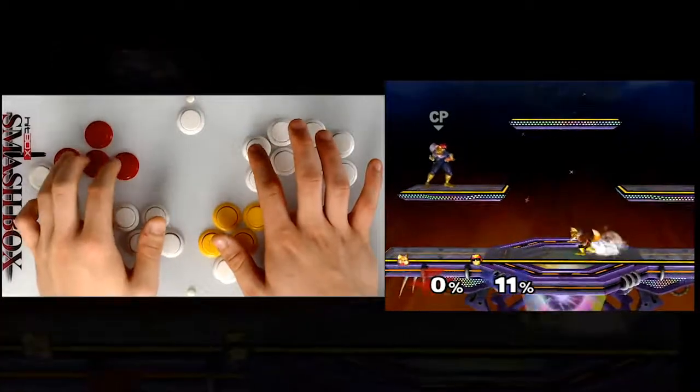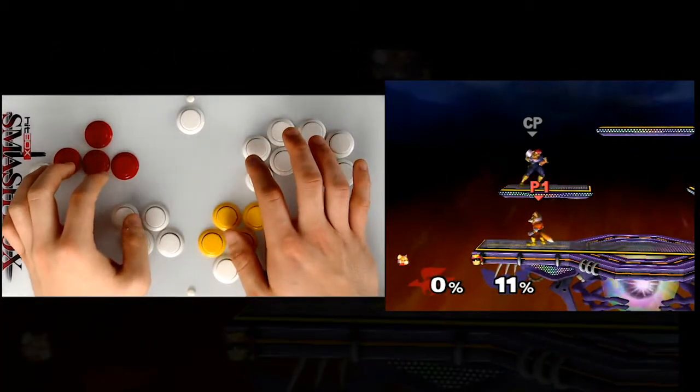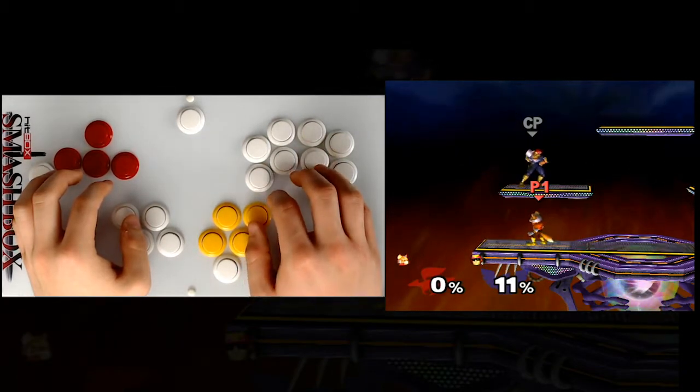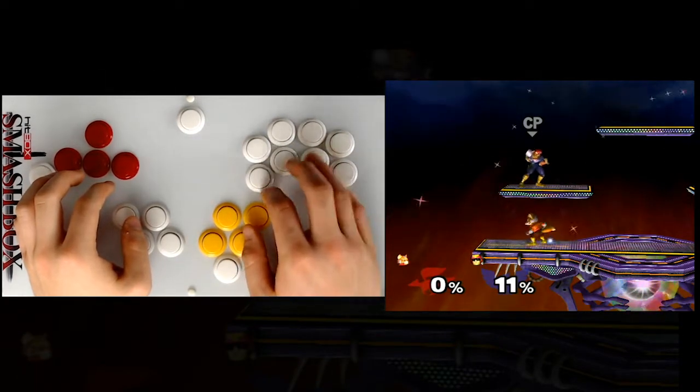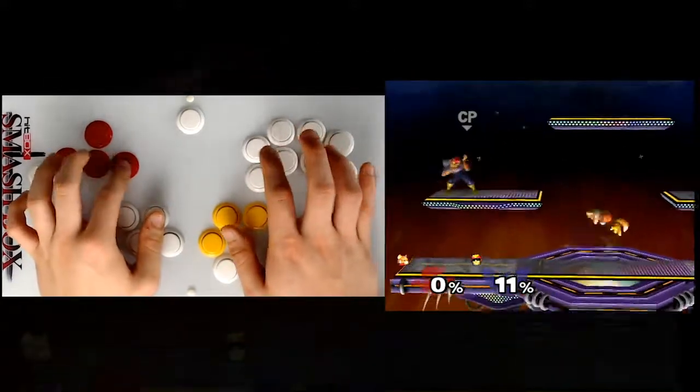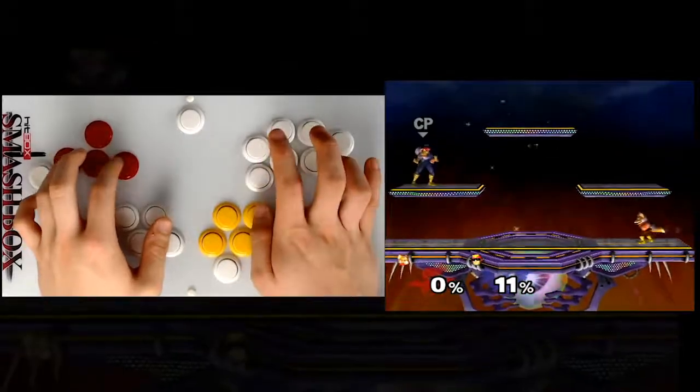The next change I made was actually sort of a strange one. I took C-Stick up, and I just removed it from this cluster of C-Stick buttons, and I put it on my ring finger. The reason I do this is because for certain techniques, especially something like shield stop down air, it's just a lot of travel time for me to go from holding C-Stick up in order to get my buffered shield stop into short hop.